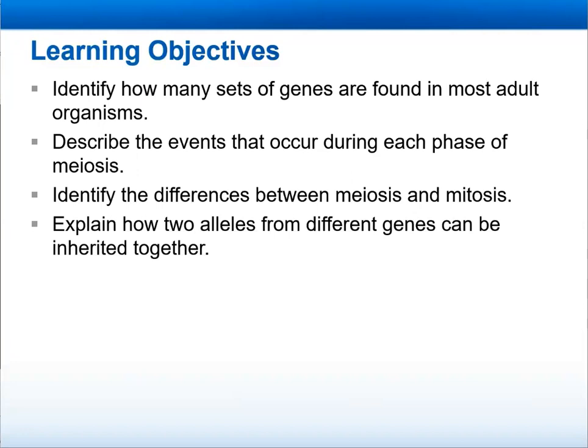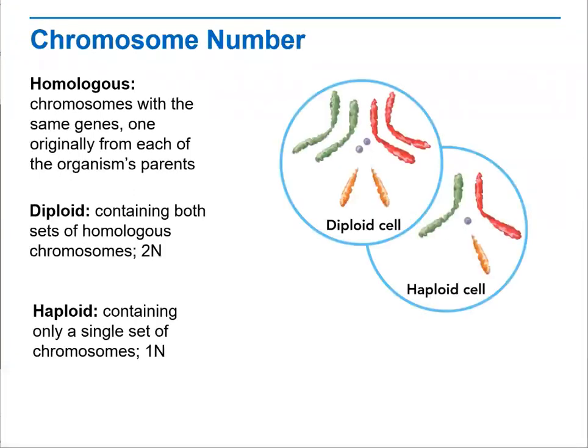We'll explain how alleles from different genes can be inherited together. First of all, we need to talk about the chromosome number. When we talk about chromosomes, we need to understand that chromosomes are homologous in their structure — meaning chromosomes with the same genes, one originally from the pair and the other one is the new one.